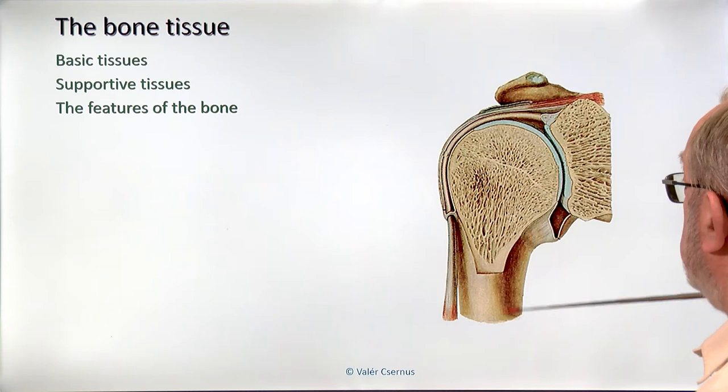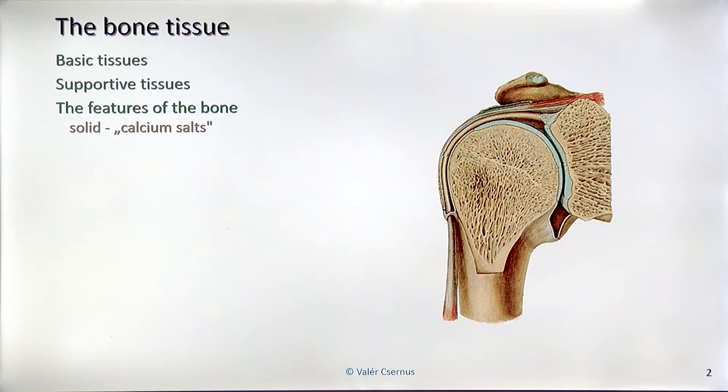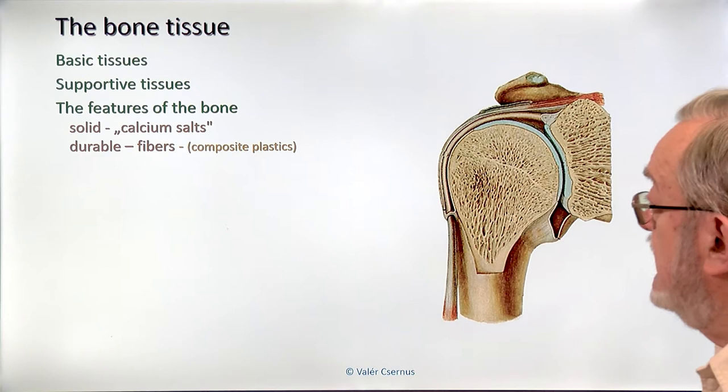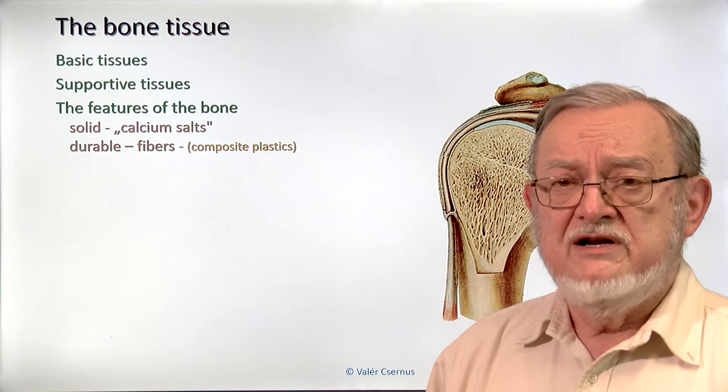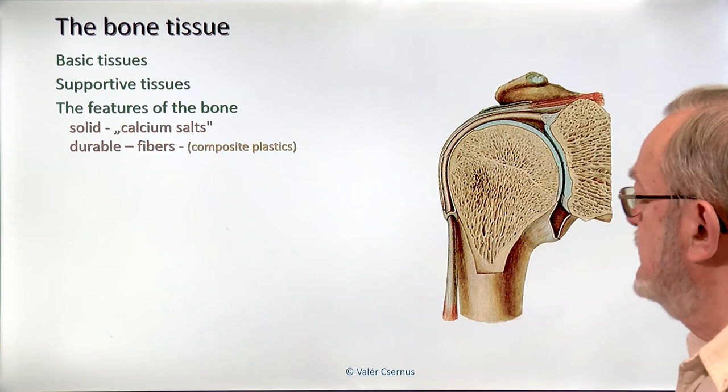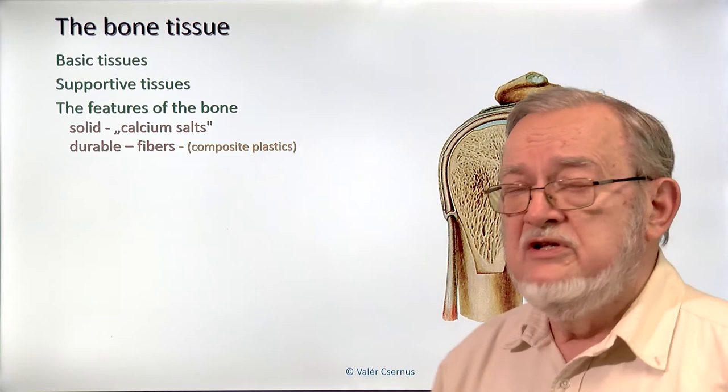You are pretty familiar with bones from the dissecting room. The most important feature is that bone is a solid tissue, and this solidity is due to calcium salts. It also contains a lot of collagen fibers, which make it very durable — without collagen fibers, it would be as fragile as clay, which consists only of inorganic substances. The structure is very similar to composite plastics.